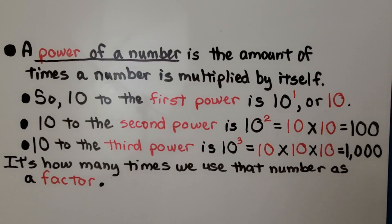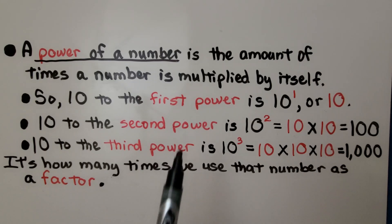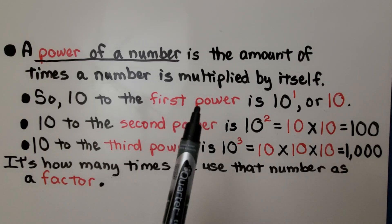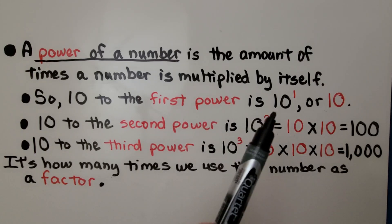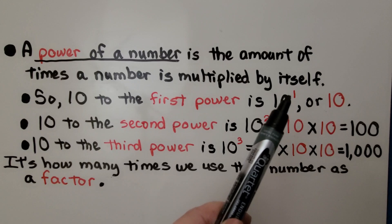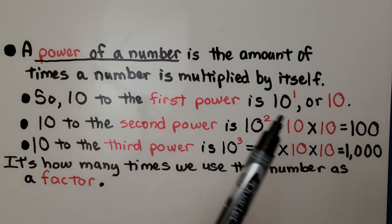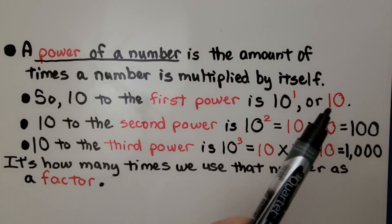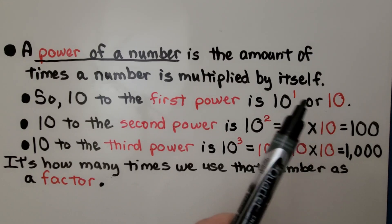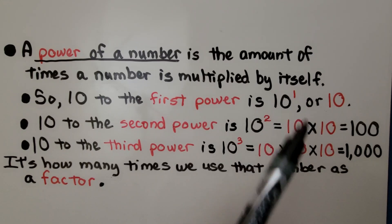A power of a number is the amount of times a number is multiplied by itself. So 10 to the first power — that's 10 with a little 1 exponent — is just 10. We have one 10.